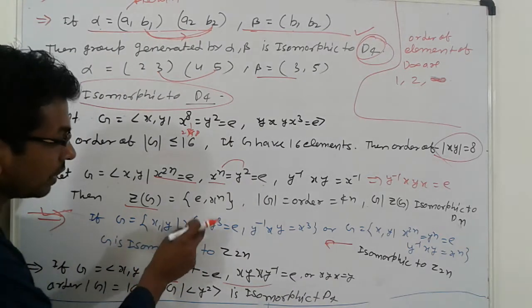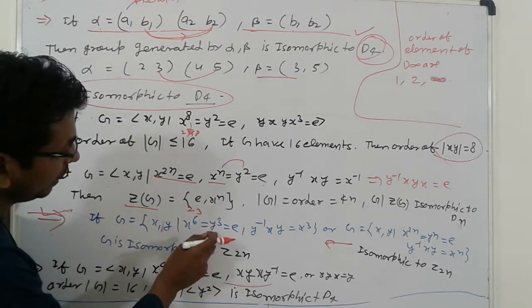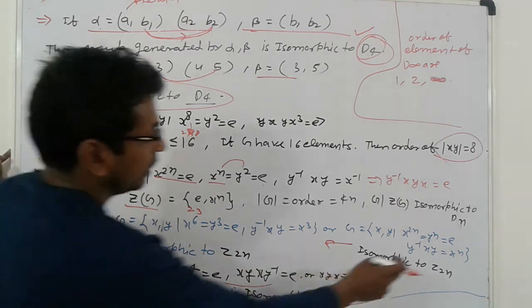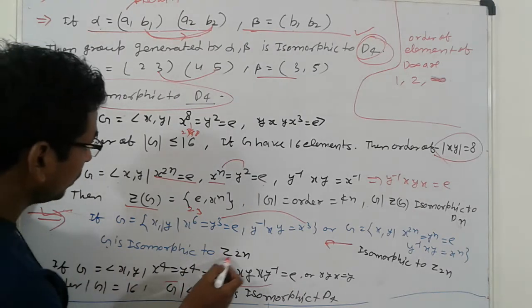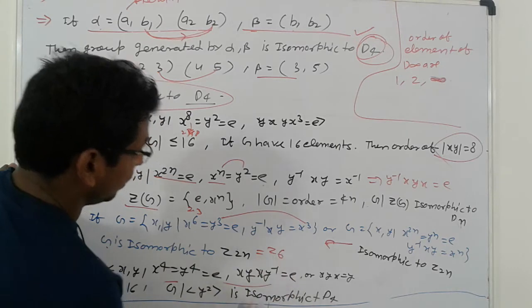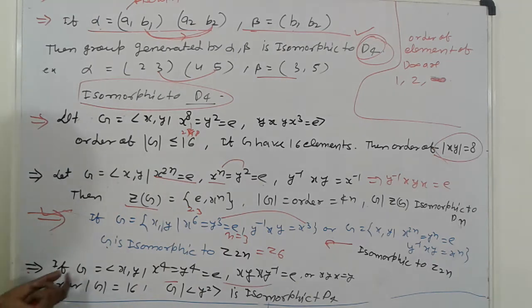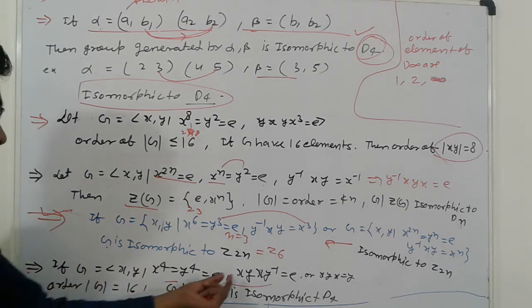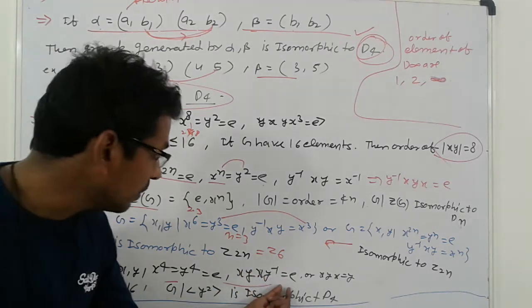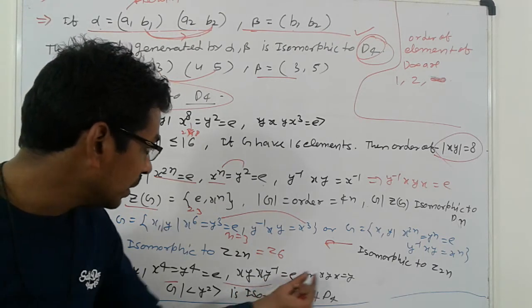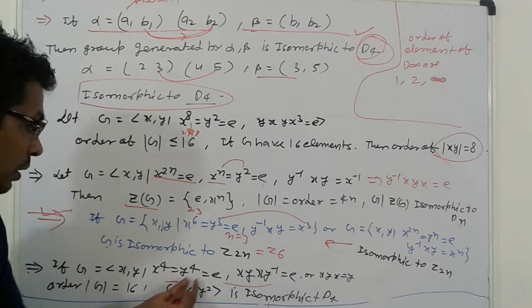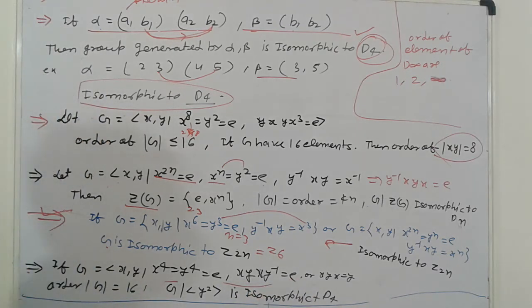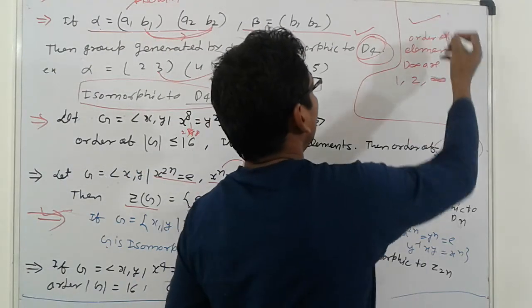For example: G = ⟨x, y | x^6 = x^3 = e and y^(-1)xy = x^3⟩, where x^n = x^3 (n=3), so G is isomorphic to Z_(2n) = Z₆. Similarly, if G = ⟨x, y | x^4 = y^4 = e and yxy^(-1) = ...⟩, then the order of G is 16 (= 4n) and G/⟨y⟩ is isomorphic to D4.